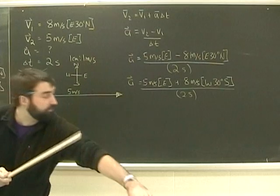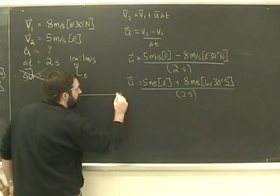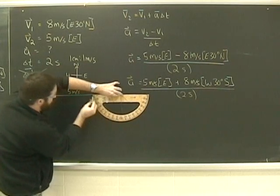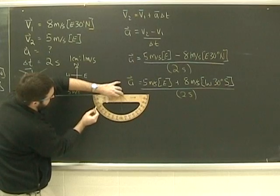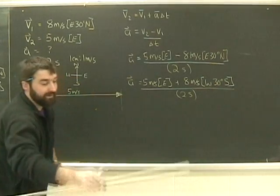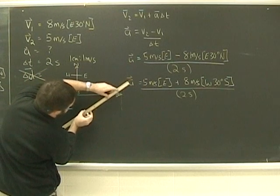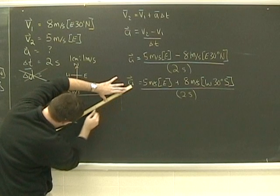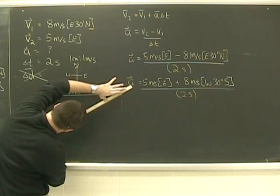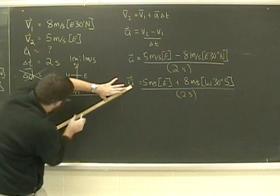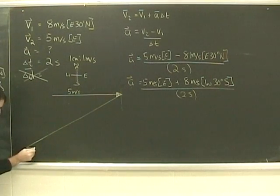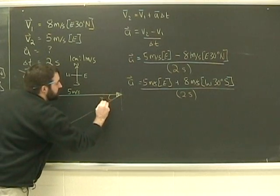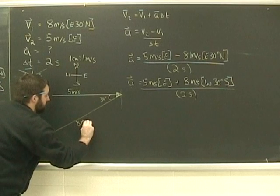Then I grab my protractor here and I draw a vector which is west 30 degrees south. That is 8 centimeters long. My little arrowheads on it. This angle is 30 degrees. This is 8 meters per second.